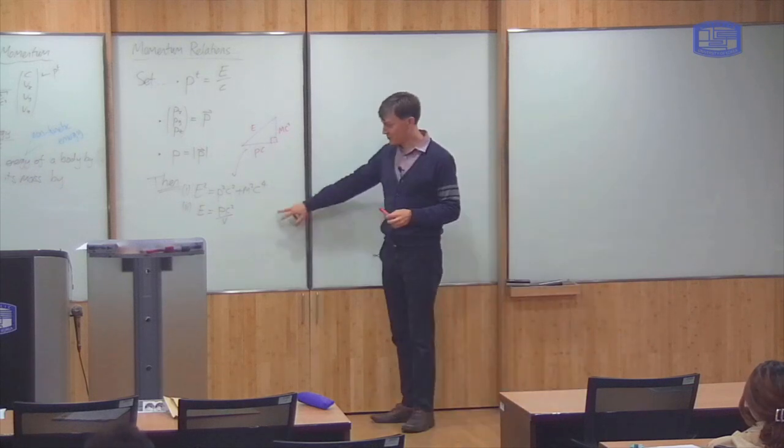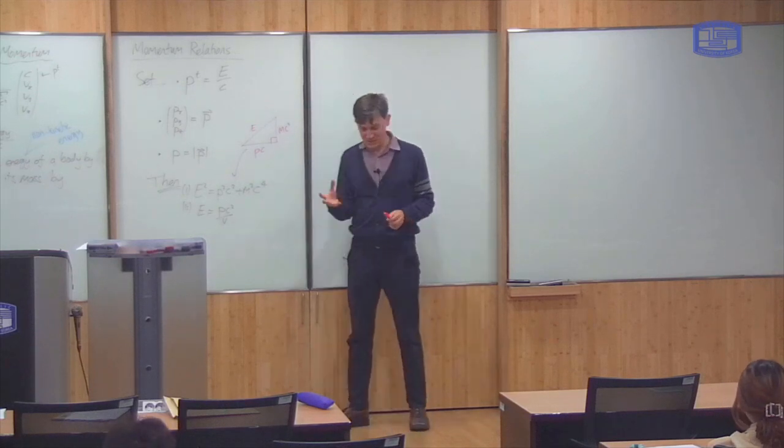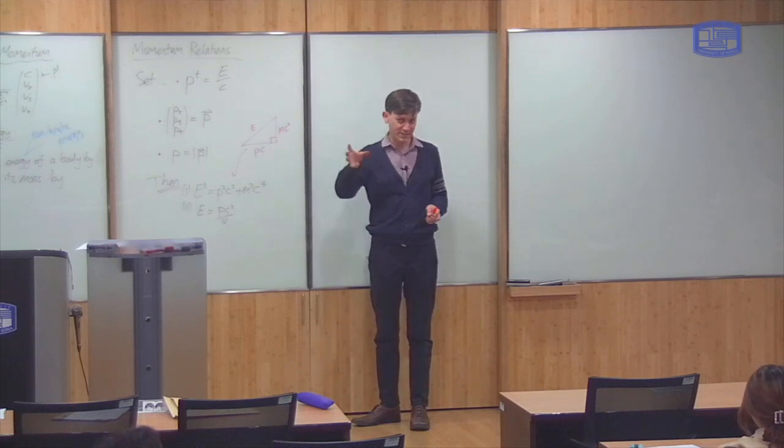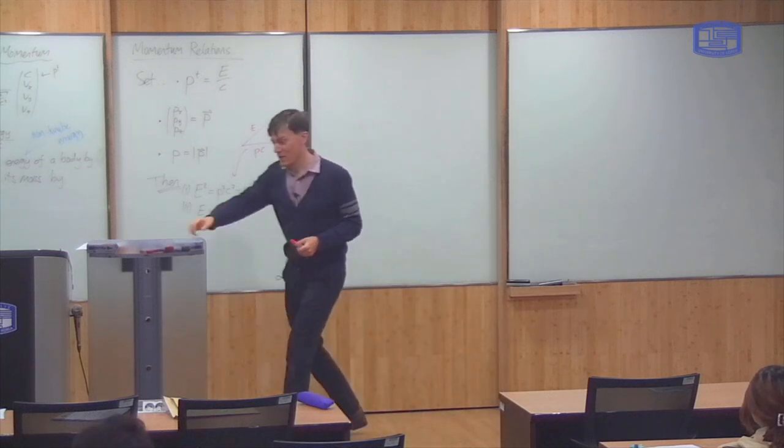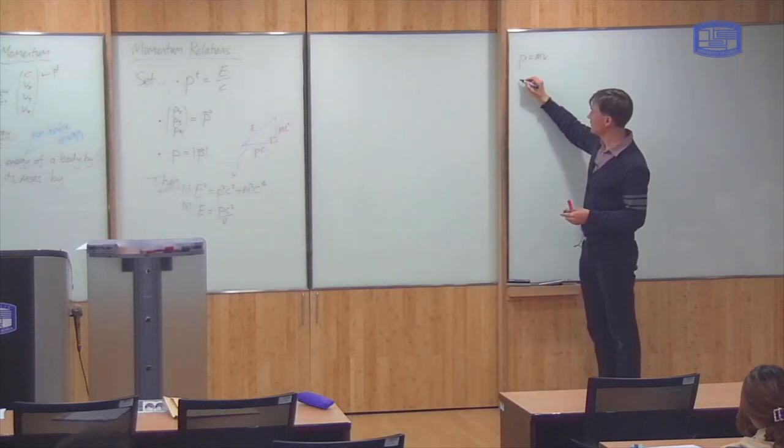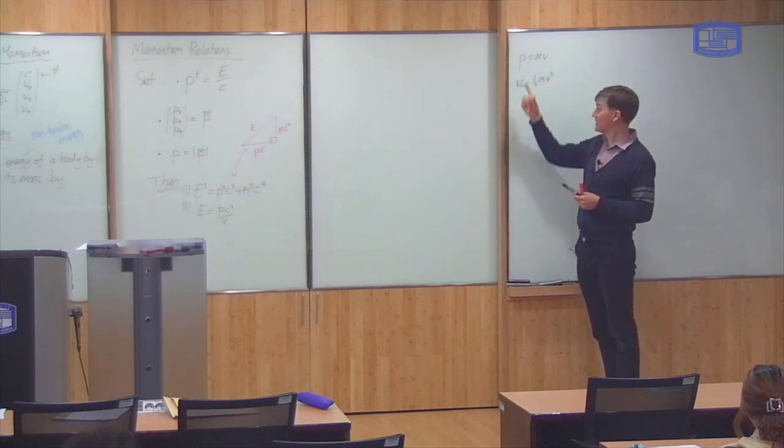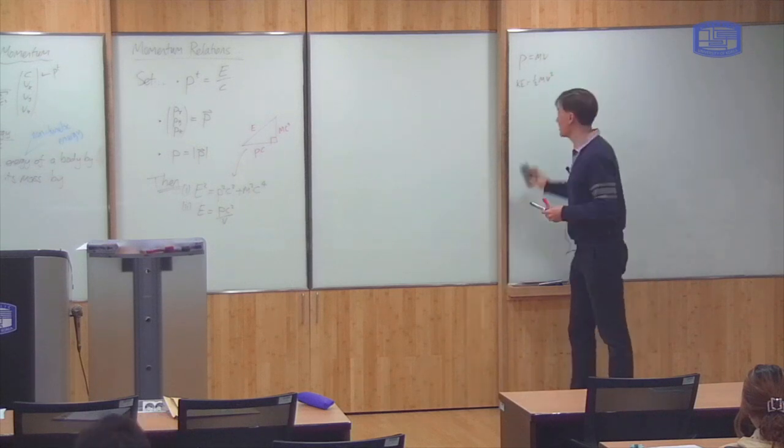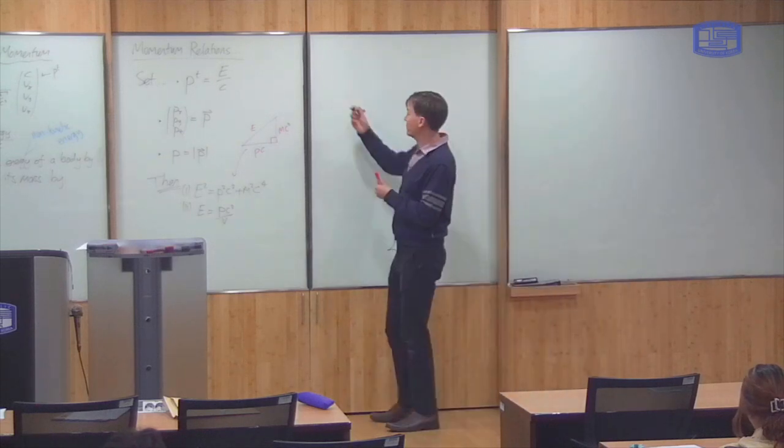Right. An interesting consequence of these two equations is that in special relativity, you can have particles which have zero mass but still carry kinetic energy and momentum. In Newtonian physics, you have these equations. Momentum is mass times velocity, and kinetic energy is a half mv squared. So if the particle is massless, it has zero momentum and zero kinetic energy. But the same thing is not true always in general relativity.